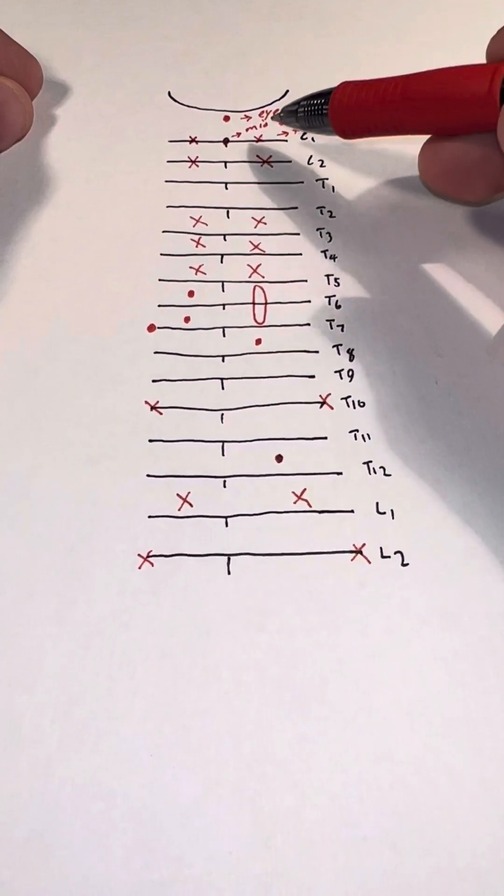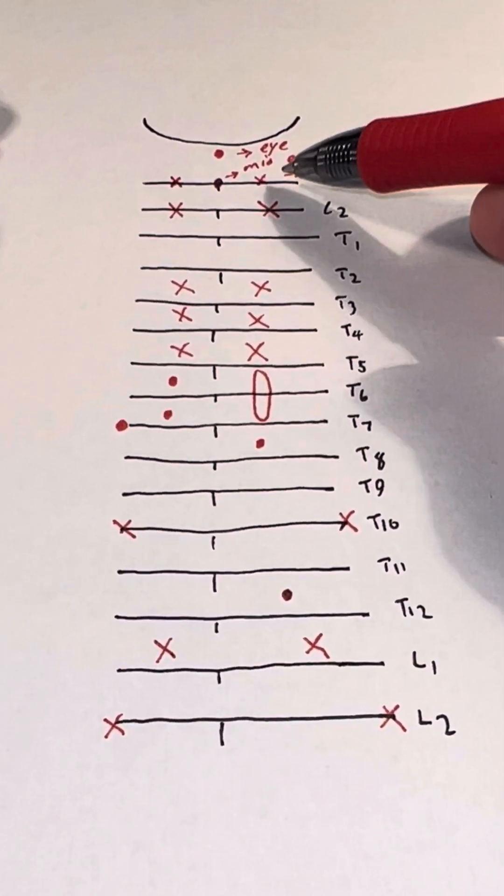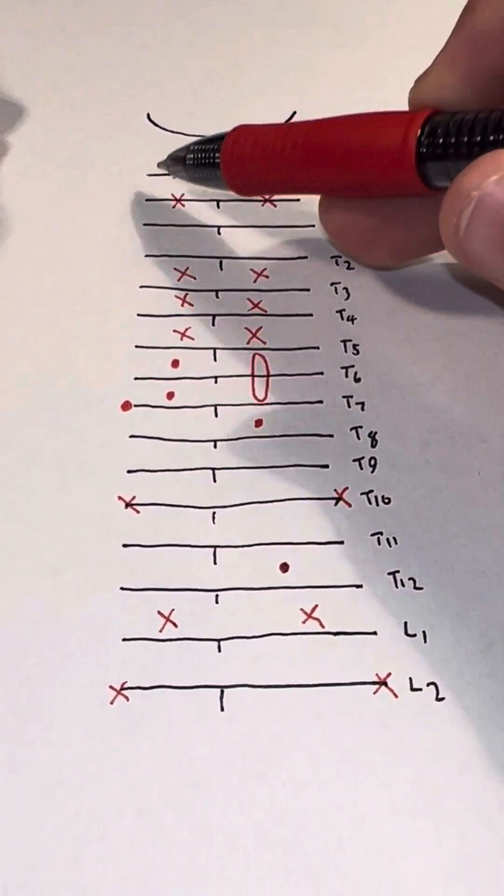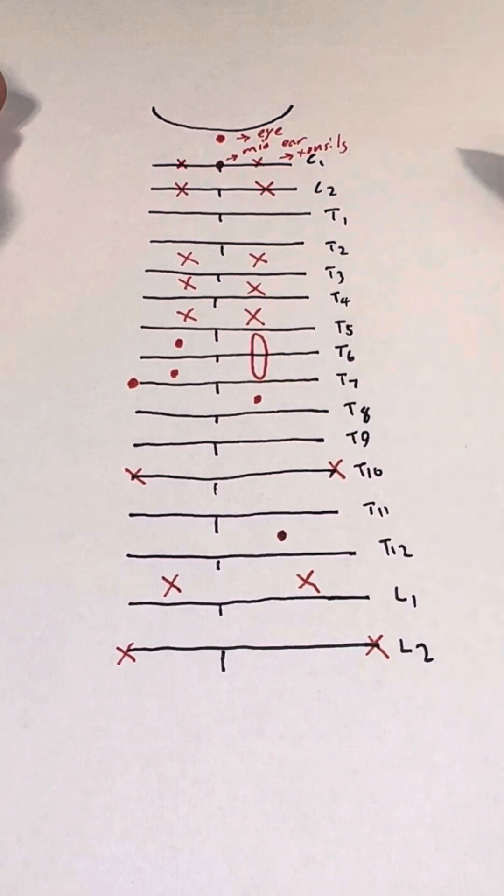Again, when it's an X, it represents the same structure, just symmetrical. So X here is a tonsil on the right side and also a tonsil on the left side.